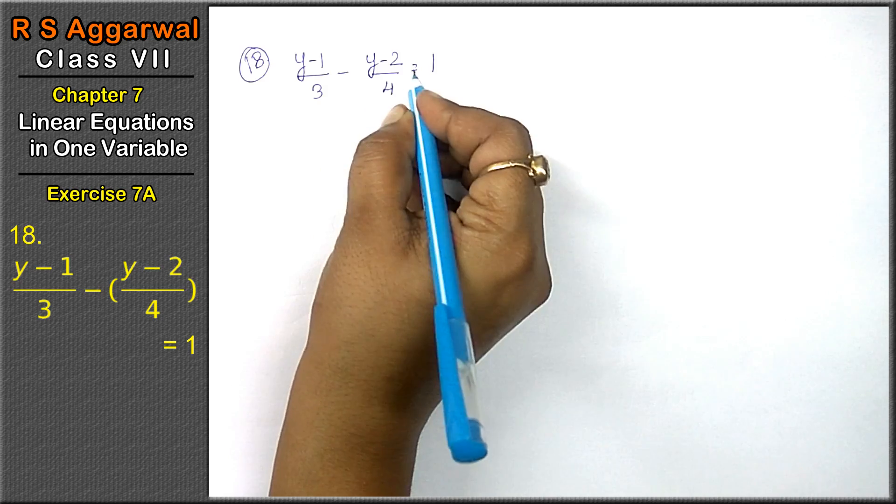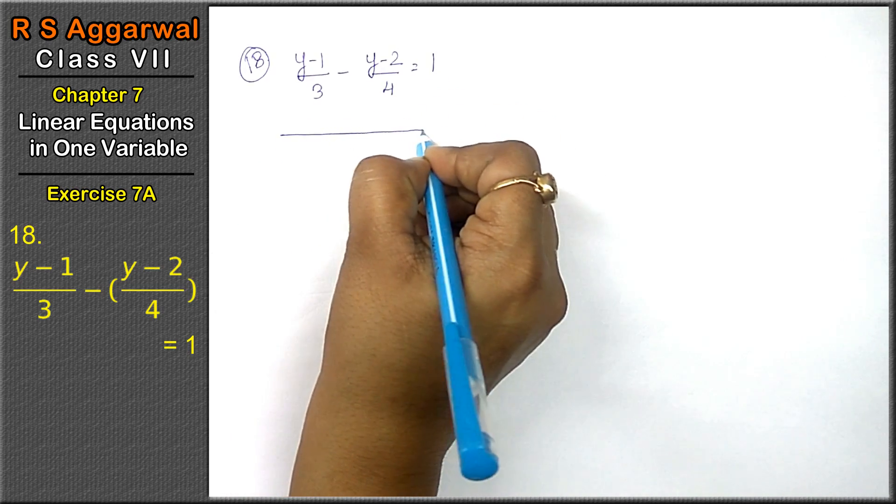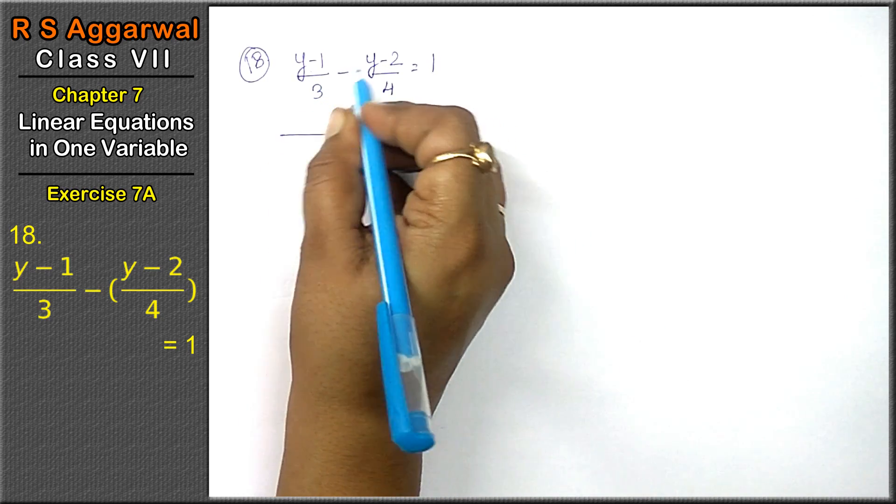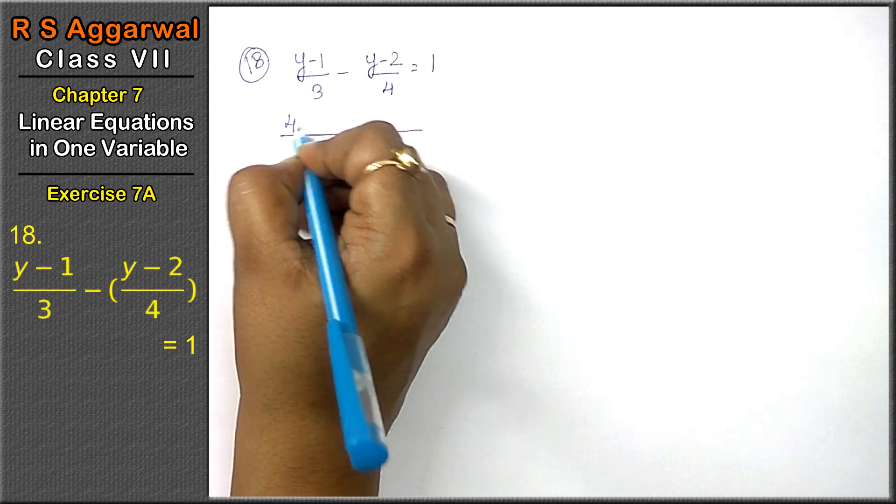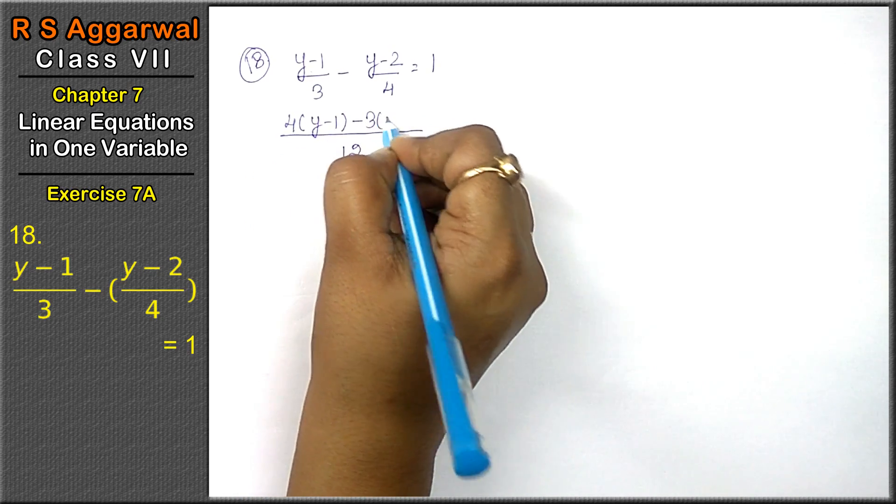Let's take the LCM. The LCM of 4 and 3 is 12. Now multiply: 4 into (y-1) minus 3 into (y-2) equals 1.